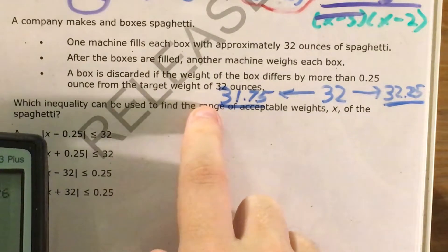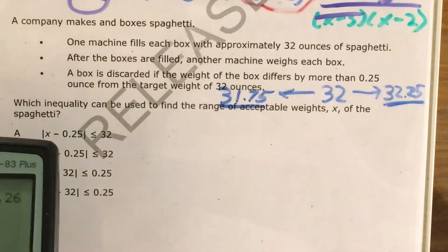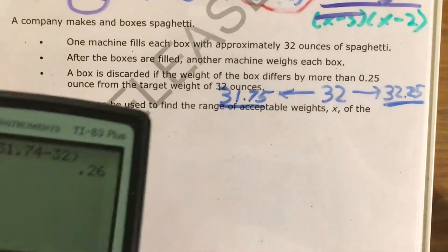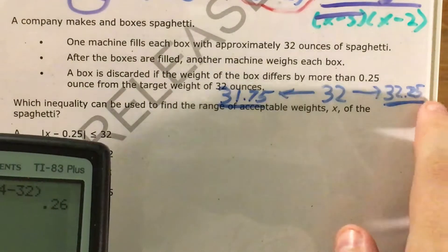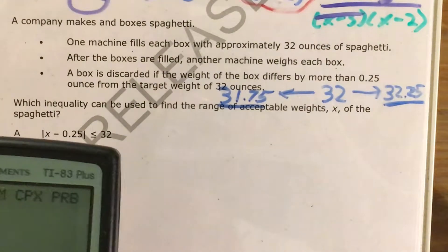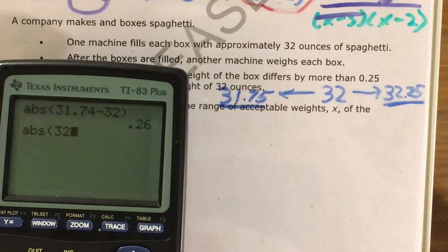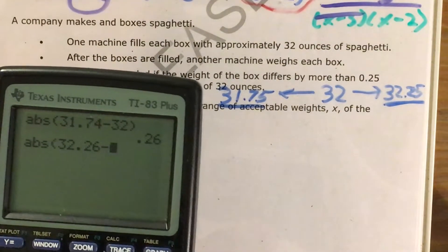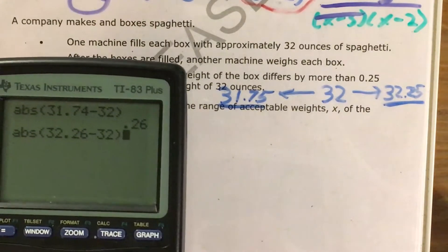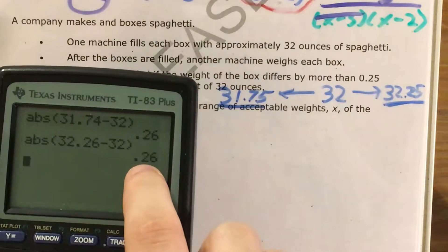So a weight just outside this range would differ by more than a quarter of an ounce, just a little bit more, but still different. And then if I were to go the other way and test out the absolute value of, just outside this range, 32.26 minus 32, that gives me the same thing.